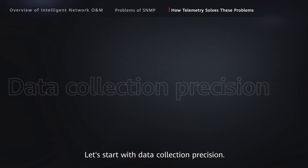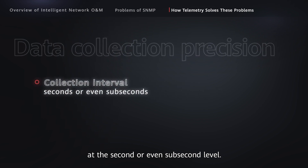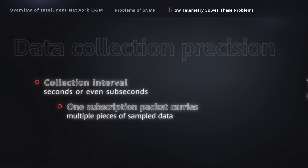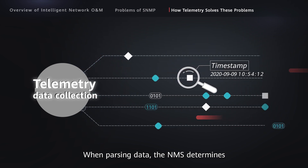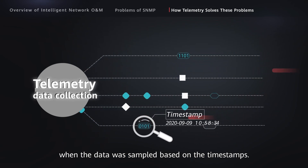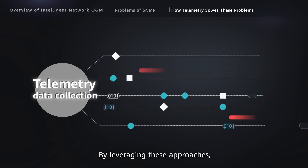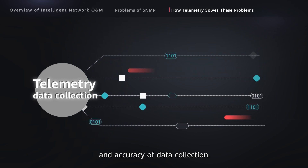Let's start with data collection precision. First, the telemetry collection interval is at the second or even sub-second level. Second, telemetry allows one subscription packet to carry multiple pieces of sample data, reducing the number of exchanges between the NMS and devices. Third, data collected by telemetry carries a timestamp. When passing data, the NMS determines when the data was sampled based on the timestamps, which prevents the impact of network transmission delay on sample data. By leveraging these approaches, telemetry improves the precision and accuracy of data collection.